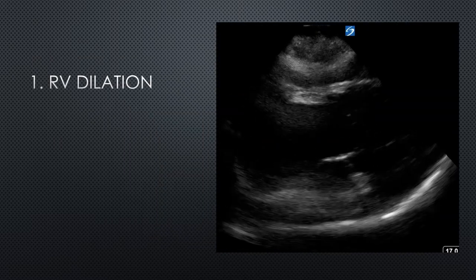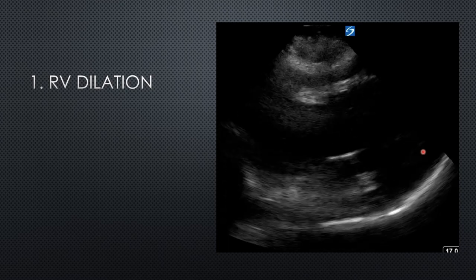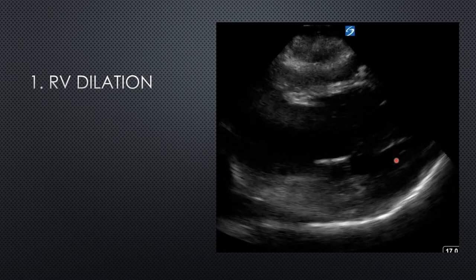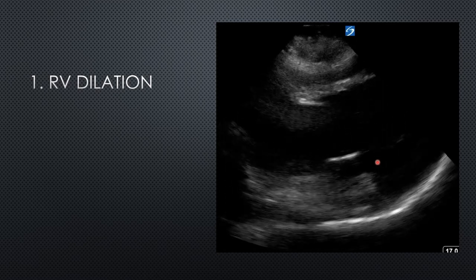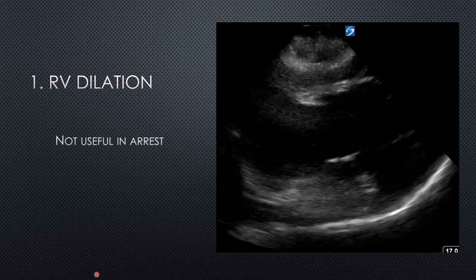This subcostal view was taken during a cardiac arrest in the rhythm pulse check. Here is the RV and here is the LV. Is the RV dilated? Yes, it's definitely bigger than the LV. But is that specific for a PE in the context of an arrest? No, it's not. Our guard did a study in Denmark where he took 30 pigs — 10 put into arrest through hypovolemia, 10 through hyperkalemia, and 10 through arrhythmia — and in all 30 pigs, the RV dilated within about 30 seconds of the arrest. So RV dilation is a common phenomenon in cardiac arrest and is not specific to PE.